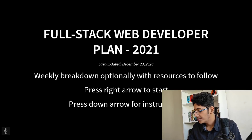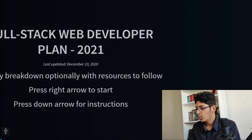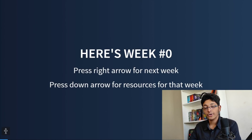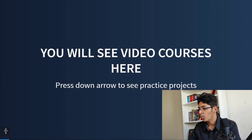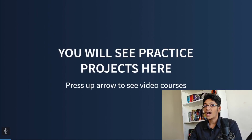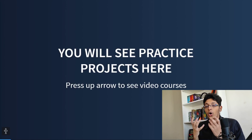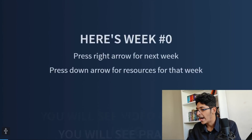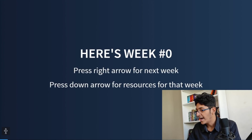You can click the right arrow key to see what you need to do each week. Week zero shows the main screen with the tasks you need to complete. If you scroll down you can see the video courses you can take and the projects you need to build that particular week. You can navigate back up with your arrow keys as well.